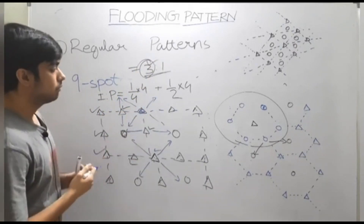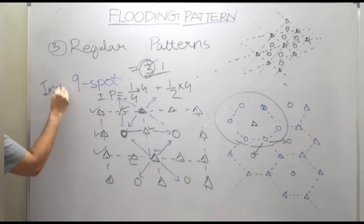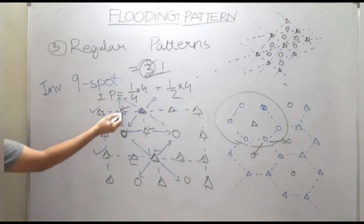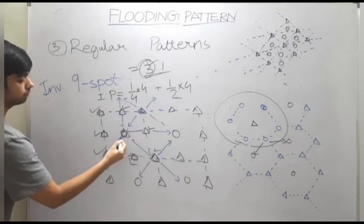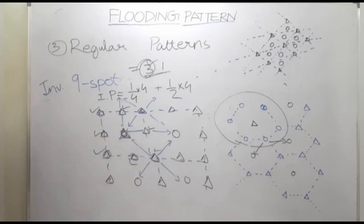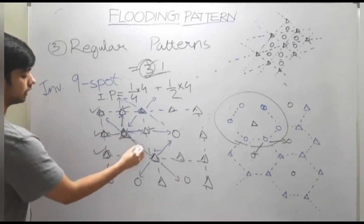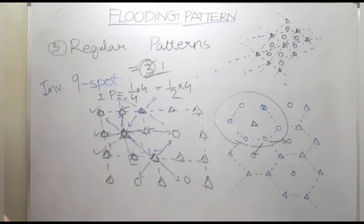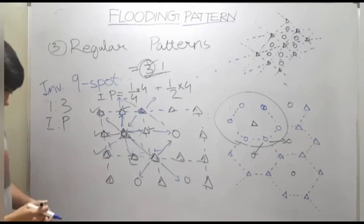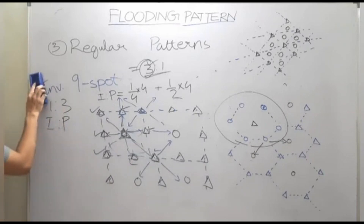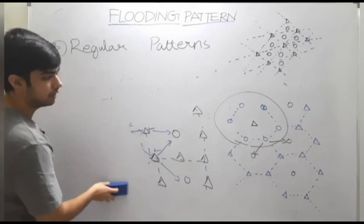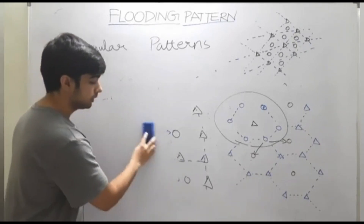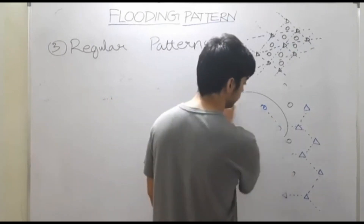Similarly, you can have the inverted nine-spot pattern, in which the injector wells get converted to producing wells and the center producing well gets replaced with one injector well. In this case the ratio will be one-to-three — three producers for one injector. Among all these patterns, the five-spot and nine-spot patterns are most widely used, with the five-spot pattern being the most common pattern for water flooding.